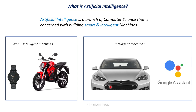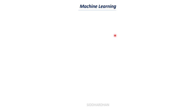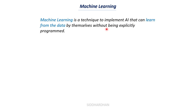There are machines that are not intelligent and machines that are built intelligently and can do tasks that humans do. We also have smart watches, which can be intelligent sometimes. Now, machine learning is a technique to implement AI — it allows systems to learn from data by themselves without being explicitly programmed. We need machine learning to know how to build these AI systems.